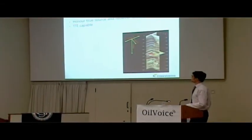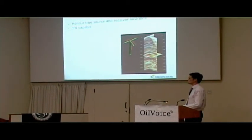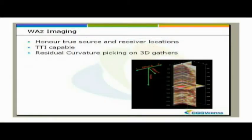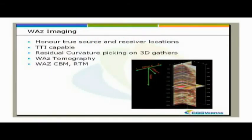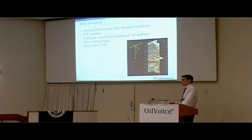For wide azimuth imaging, we need to honour the true source and receiver locations, include TTI anisotropy, and pick residual curvature from these 3D gathers — so we're no longer picking events, we're picking surfaces. We need to feed them into a tomography that's been adapted to wide azimuth data, then run through our imaging algorithms. Imaging algorithms are pretty much inherently 3D, so that's no problem. The main work was doing the 3D picking on the gathers and the wide azimuth tomography.